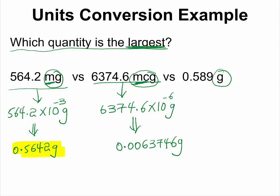Now it is very easy for us to compare the three quantities. And if you compare them, you would see that 0.589 is the largest among them.